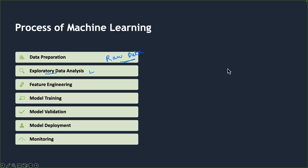Once EDA is complete, the next step is feature engineering. The data scientist cleans the data, applies business logic and transformations to generate features, making the data ready for training the model. At this point, the data is also split into training, test, and validation parts.